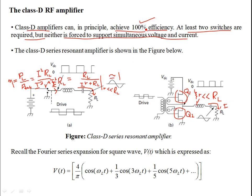Class D amplifiers can have very high fidelity response and can achieve 100% efficiency, making them better than Class C amplifiers. There are two configurations shown in parts A and B — these are series resonant Class D amplifiers. They are resonant because there is a parallel LC combination. You can use this LC combination to select the resonance frequency, given by f_resonance = 1 / (2π√LC).